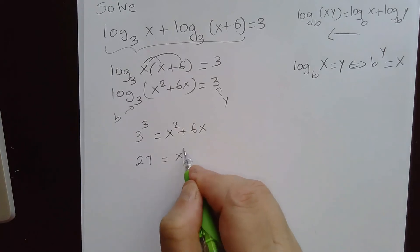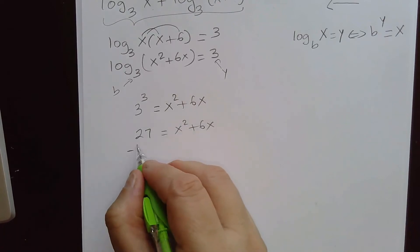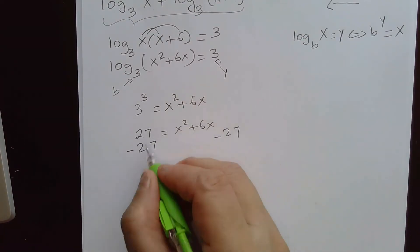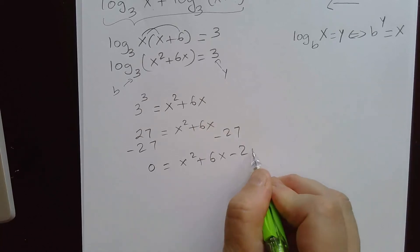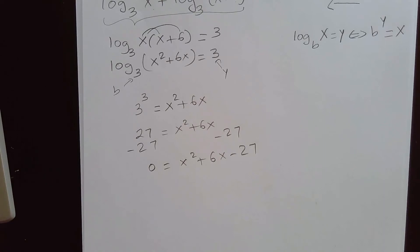Subtracting 27 on both sides of the equation to make this side equal to 0, we get x squared plus 6x minus 27 equal to 0.